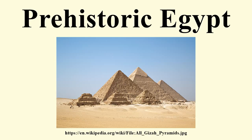In Upper Egypt, the Tasian culture was the next cultural group, named for the burials found at Deir Tasa, on the east bank of the Nile between Asyut and Akhmim. The Tasian culture is notable for producing the earliest blacktopware, a type of red and brown pottery painted black on the top and interior. This pottery is vital to the dating of pre-dynastic Egypt. W.M.F. Petrie developed a system called sequence dating, by which the relative date of any given pre-dynastic site can be ascertained by examining its pottery. As the pre-dynastic period progressed, the handles on pottery evolved from functional to ornamental. Since there is little difference between Tasian and Badarian pottery, the Tasian culture overlaps the Badarian range significantly.